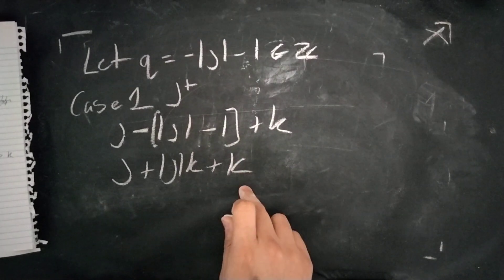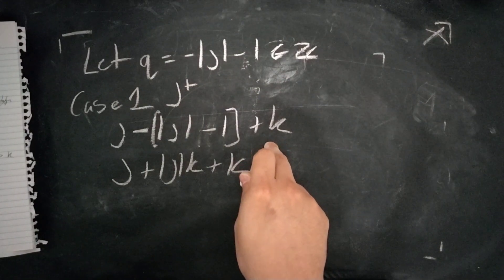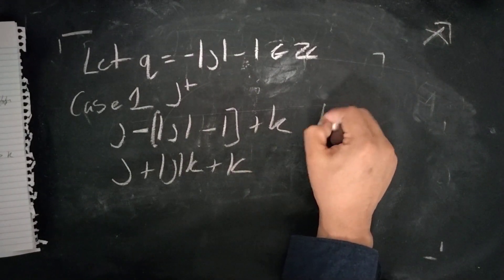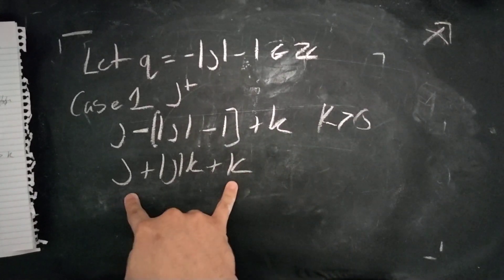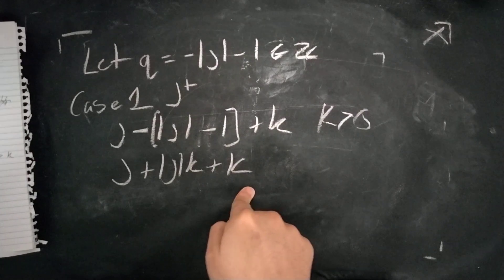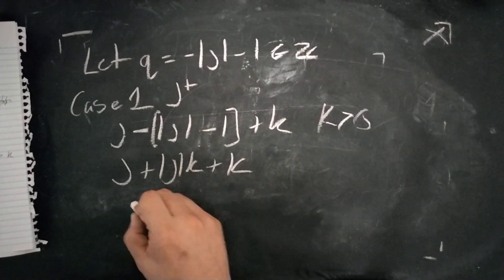This is J plus JK plus K. Now, these are all positive integers, because K has to be greater than zero. K is clearly positive. Positive, positive, positive, positive. There's no real way to get a negative value. This is just self-evident.